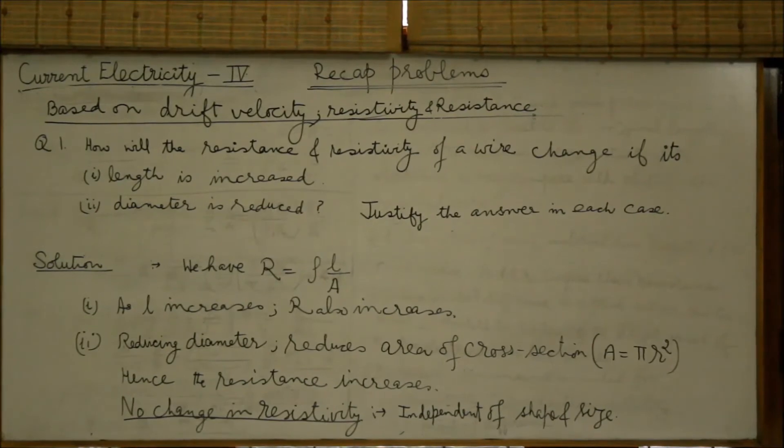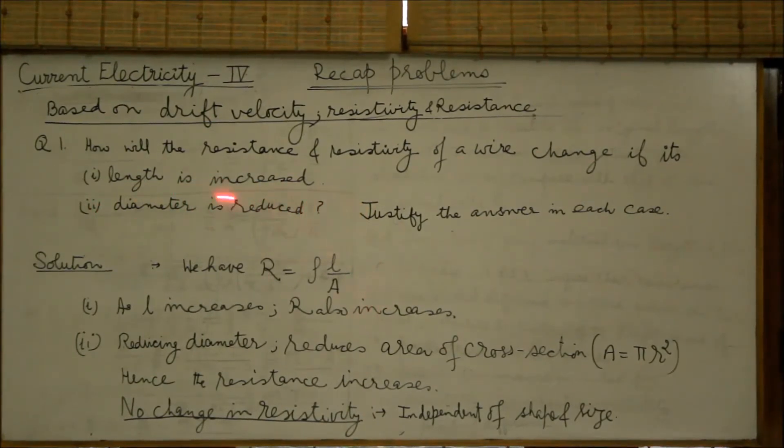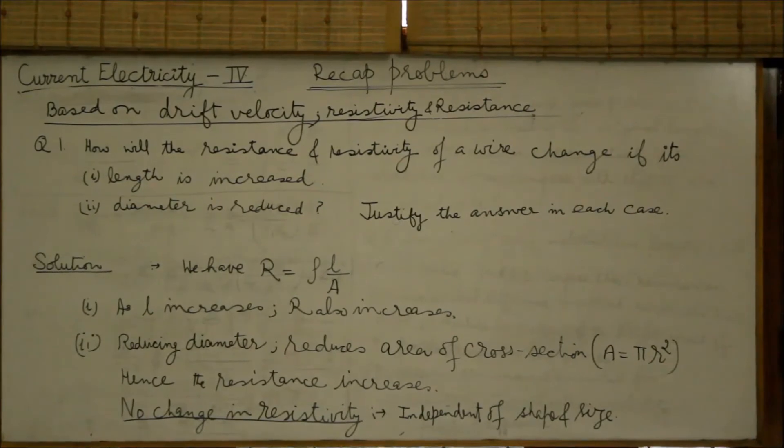There is however no change in resistivity because the resistivity is independent of shape and size. So whether the length is increased or decreased or diameter is increased or reduced, the resistivity of the wire will remain unchanged because it is a function of the nature of the material and not of shape and size.